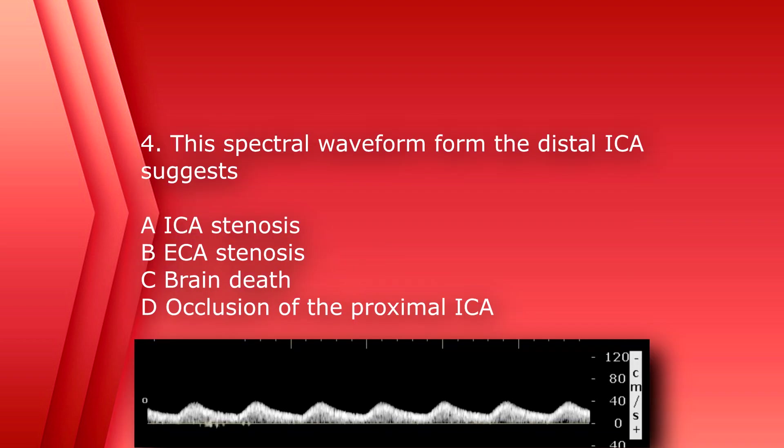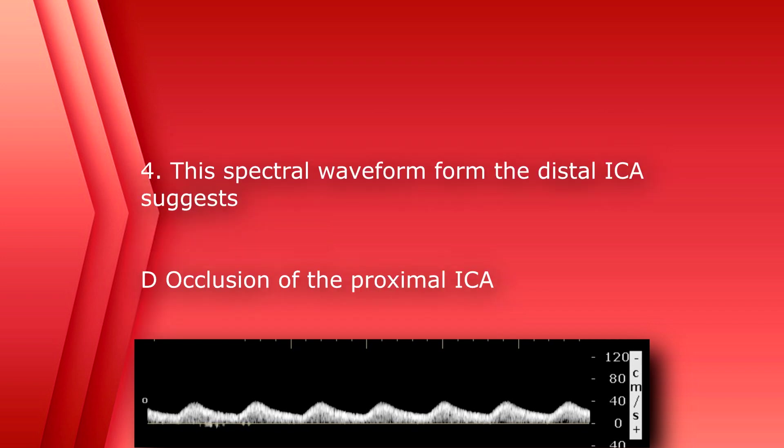Number four. This spectral waveform from the distal ICA suggests A, ICA stenosis, B, ECA stenosis, C, brain death, or D, occlusion of the proximal ICA. The answer is D, occlusion of the proximal ICA.